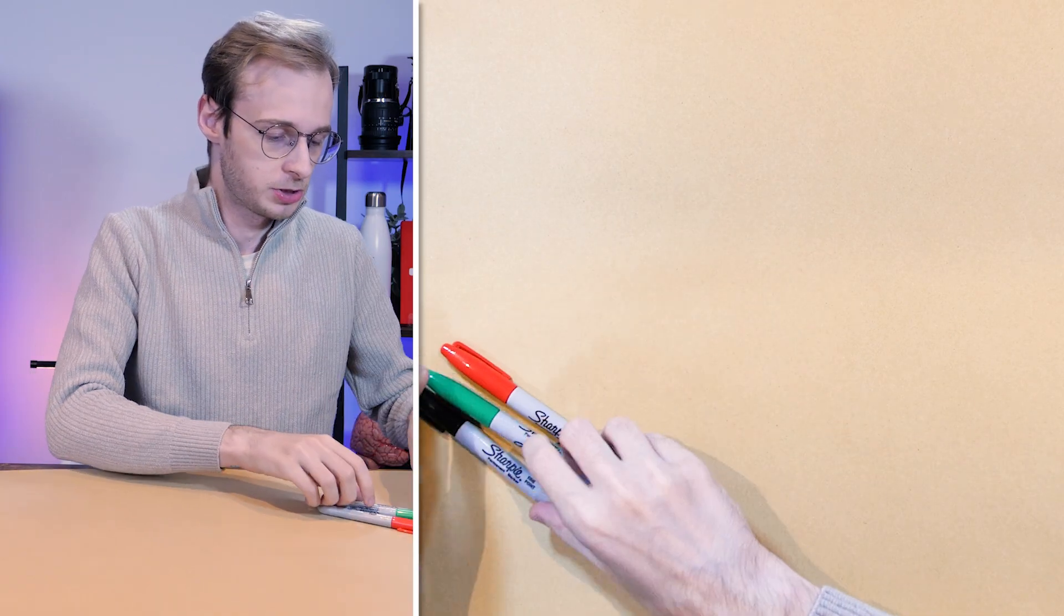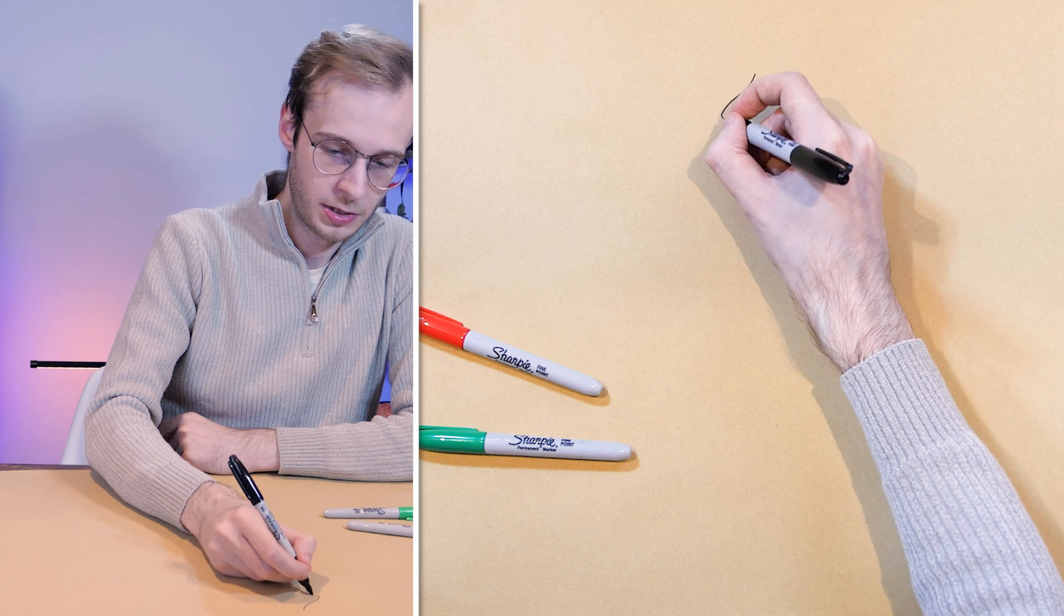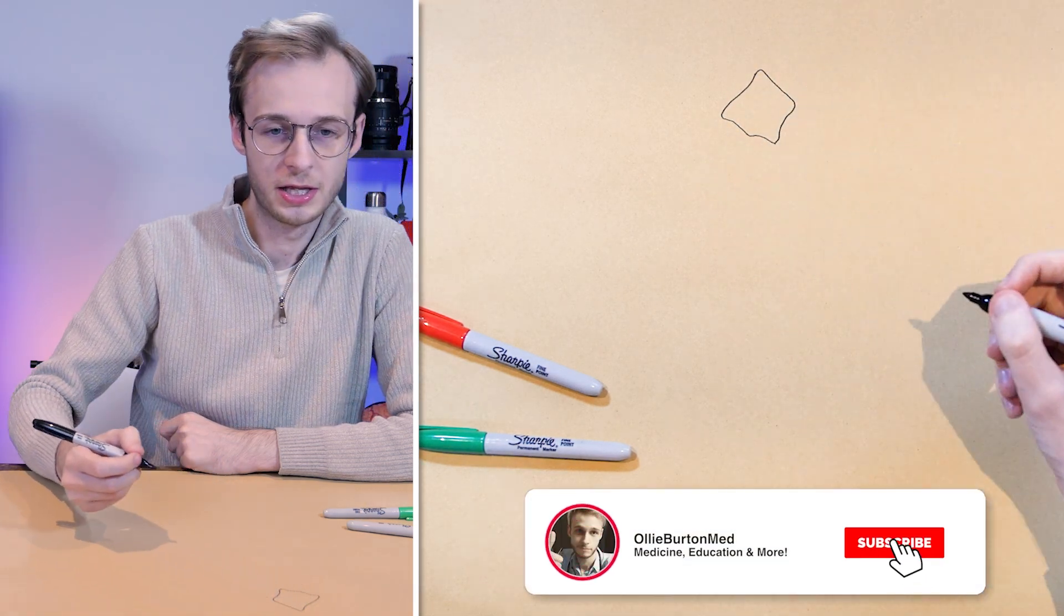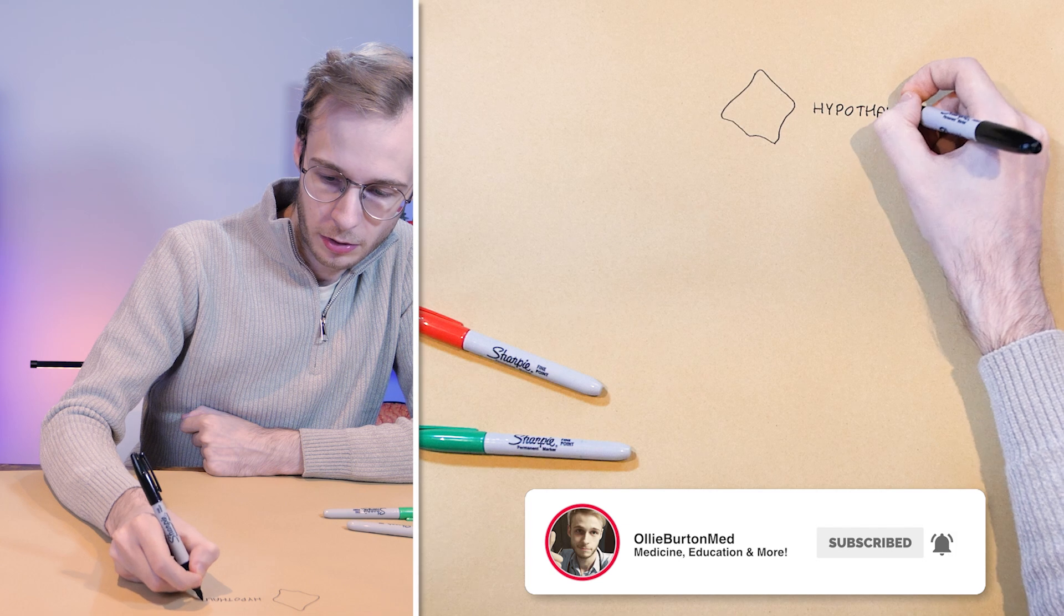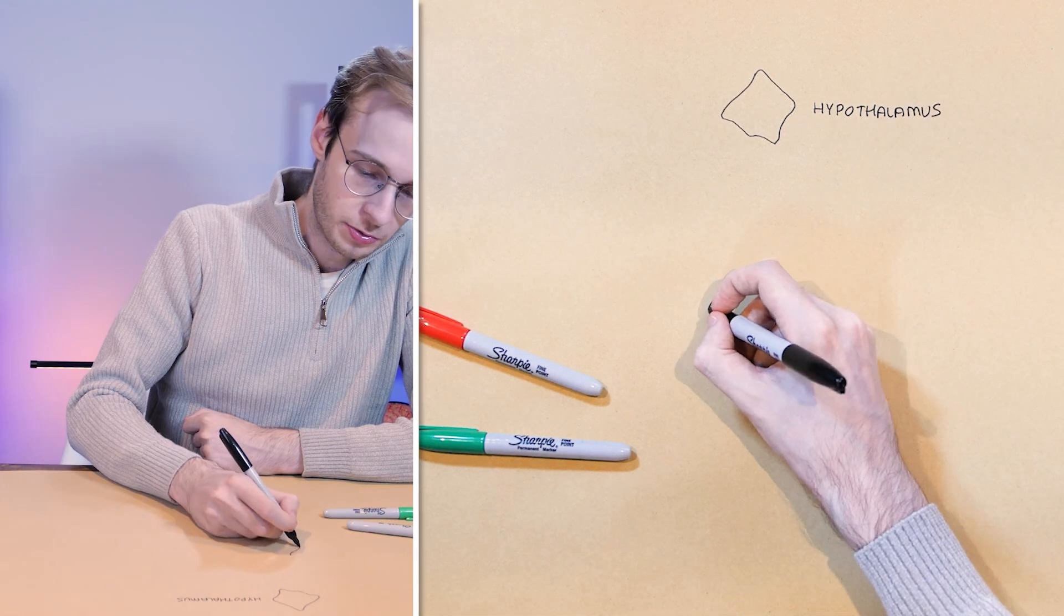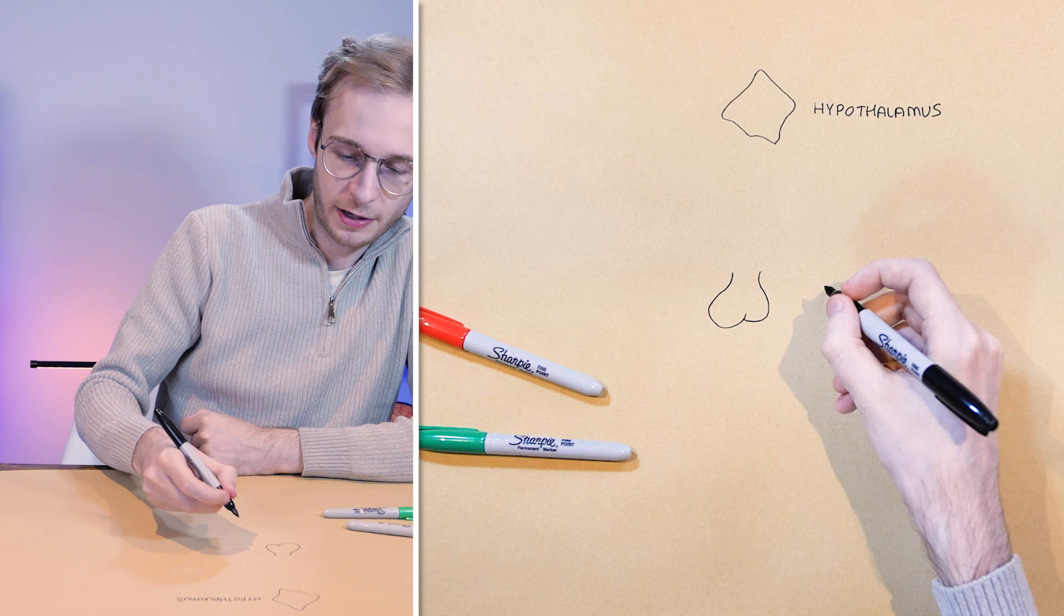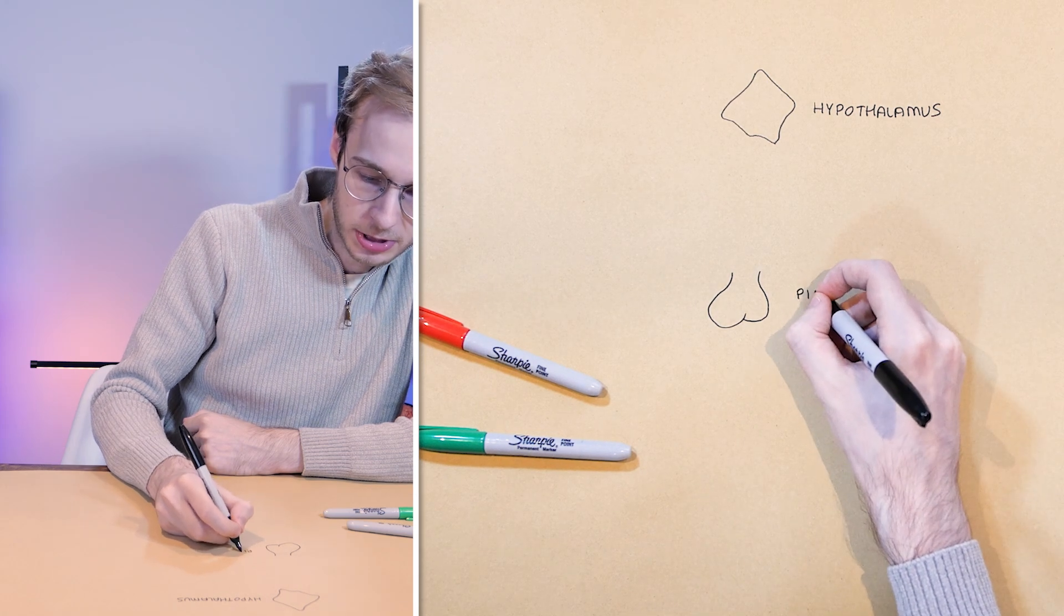Right, let's start with our basic structures. So first we are going to start with the hypothalamus sat within the brain. Hypothalamus. The next structure we need is the pituitary gland, which as you will remember is divided into anterior and posterior lobes.